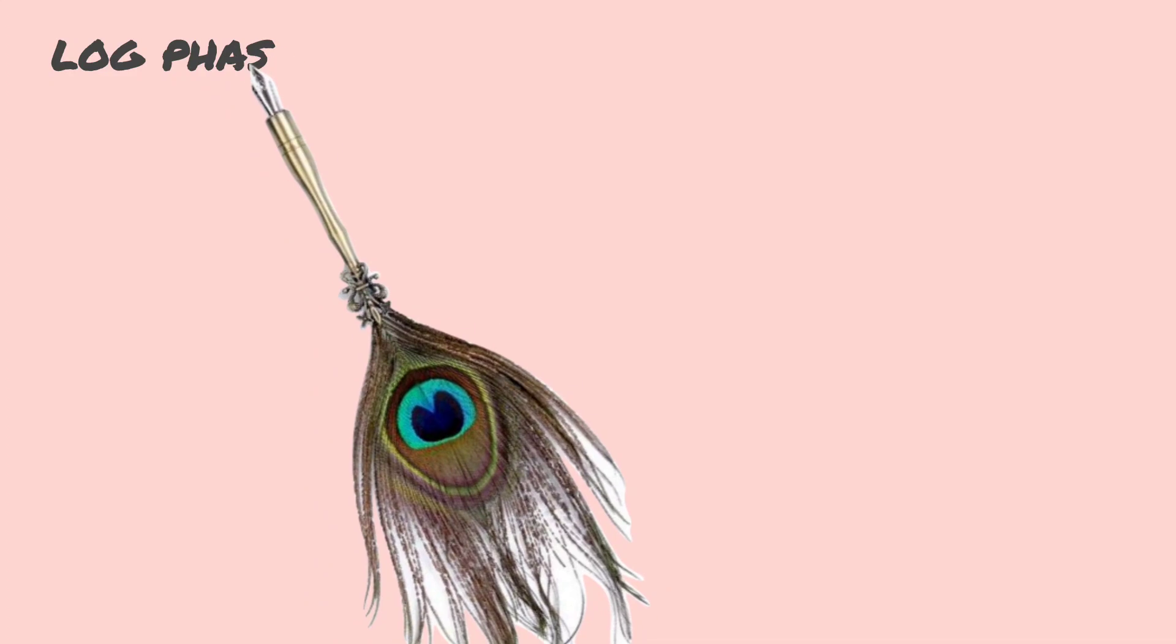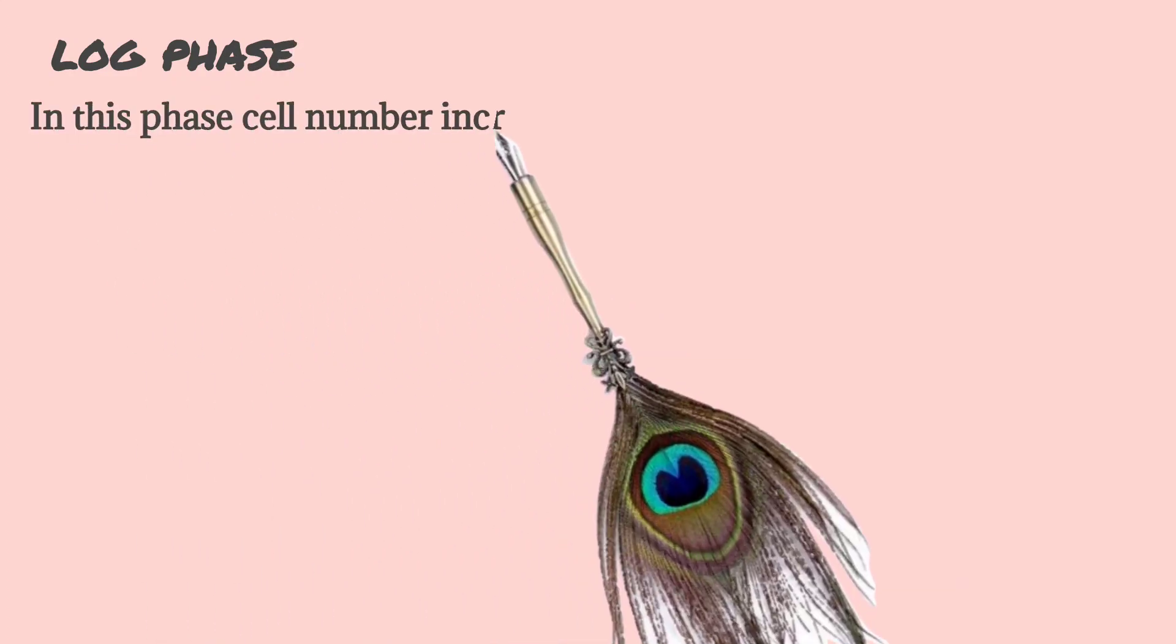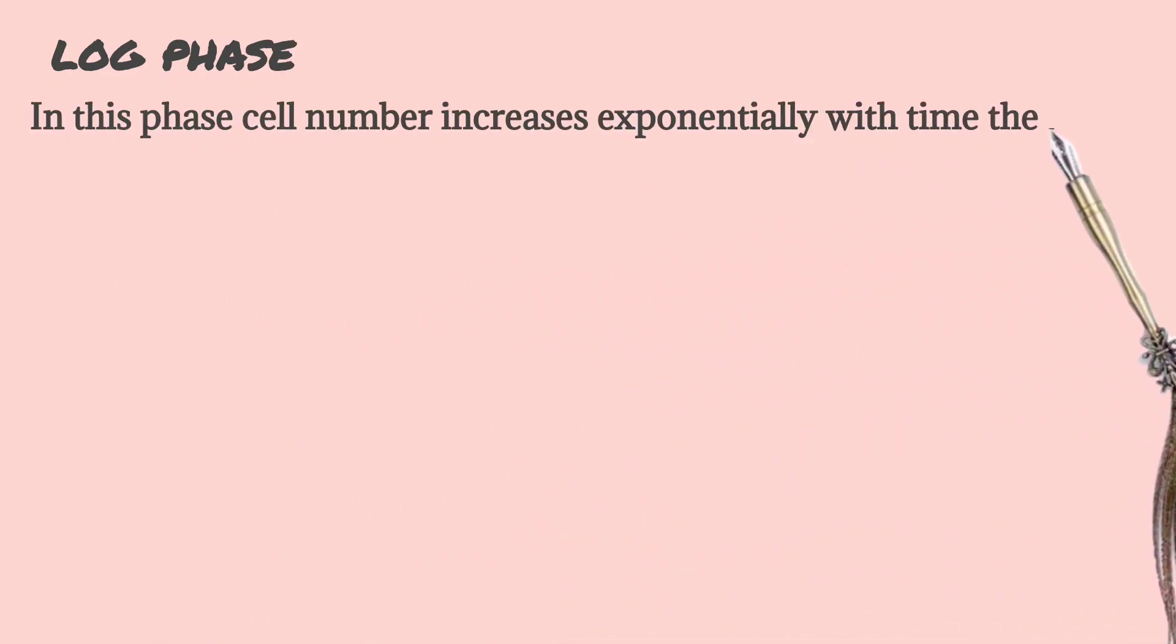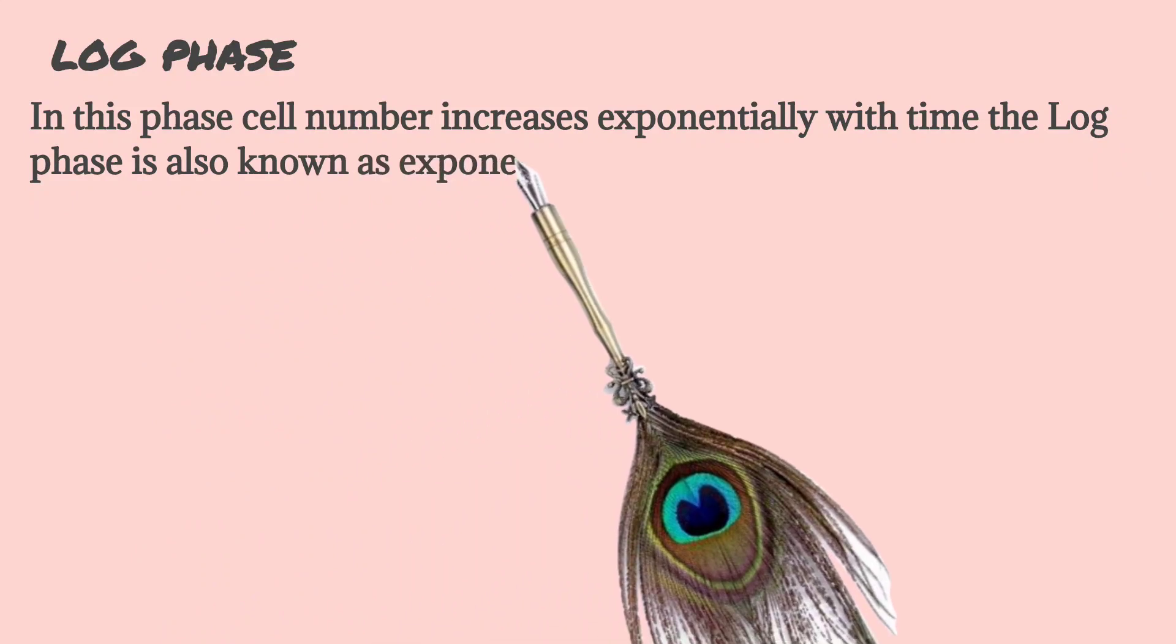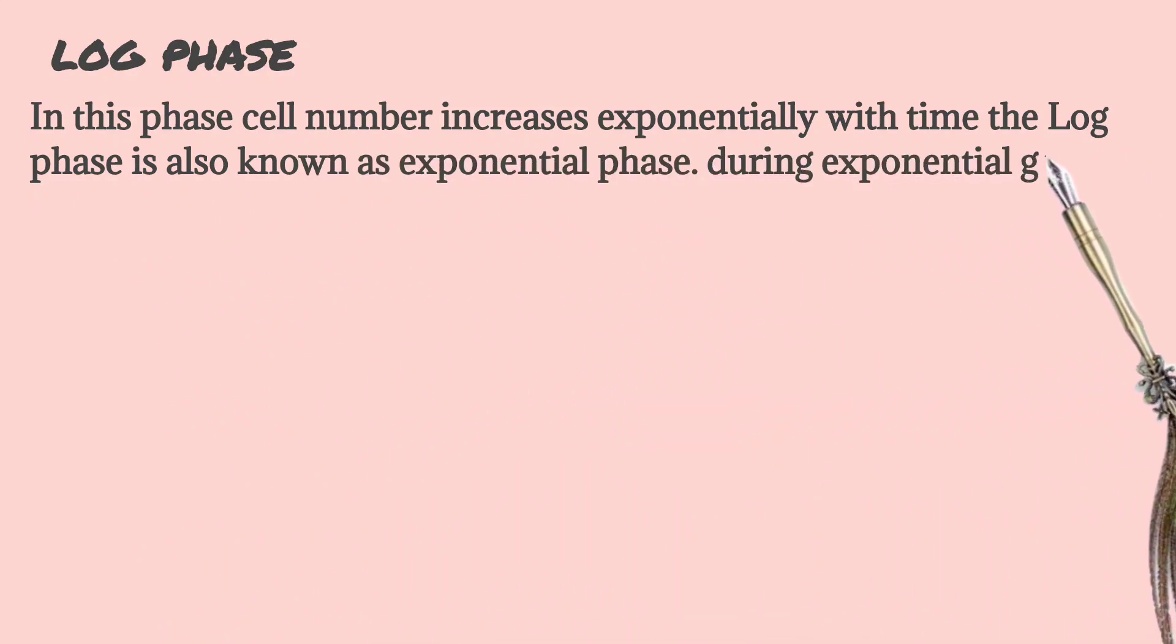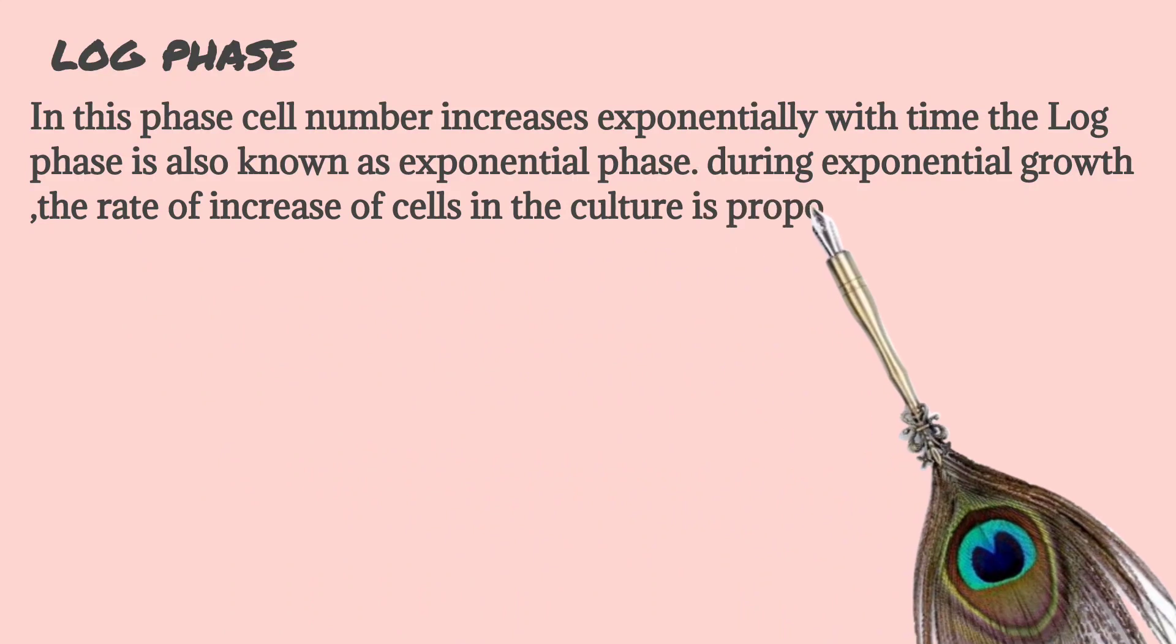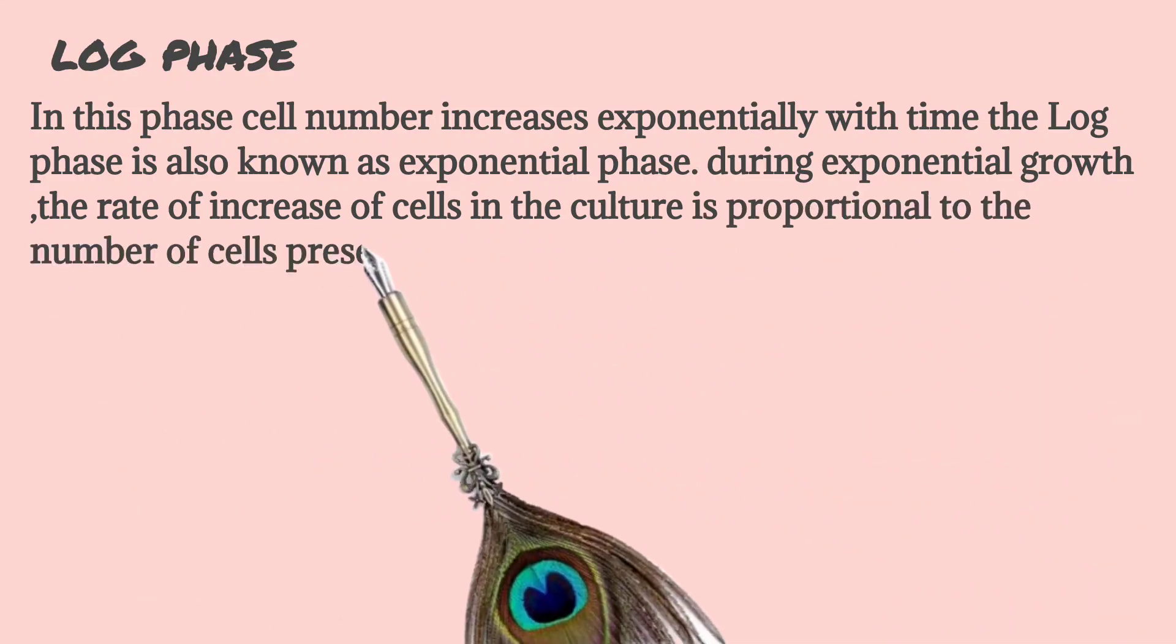The log phase. In this phase, cell number increases exponentially with time. The log phase is also known as exponential phase. During exponential growth, the rate of increase of cells in the culture is proportional to the number of cells present at any particular time.